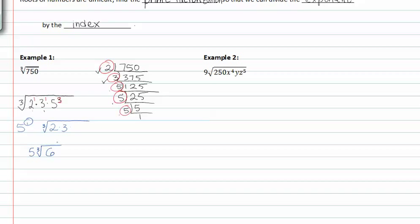On the other side, we have 250x to the fourth yz to the fifth. Again, it's helpful to prime factor our 250 to determine what the prime factors are and rewrite them as exponents. We can divide 250 by 2 and get 125, divide 125 by 5 and get 25, divide that by 5 and get 5, and divide 5 by 5 and get 1.